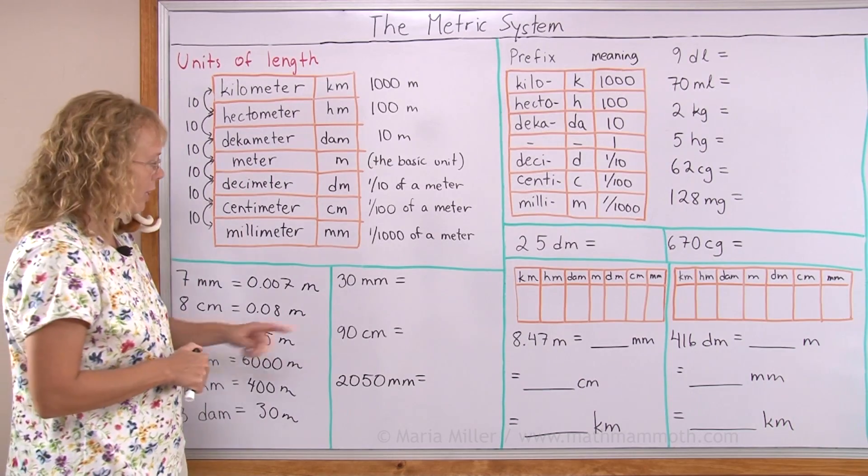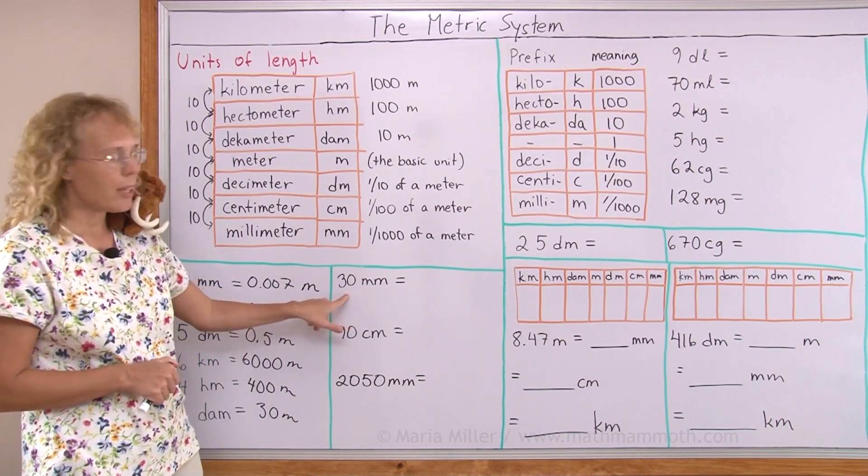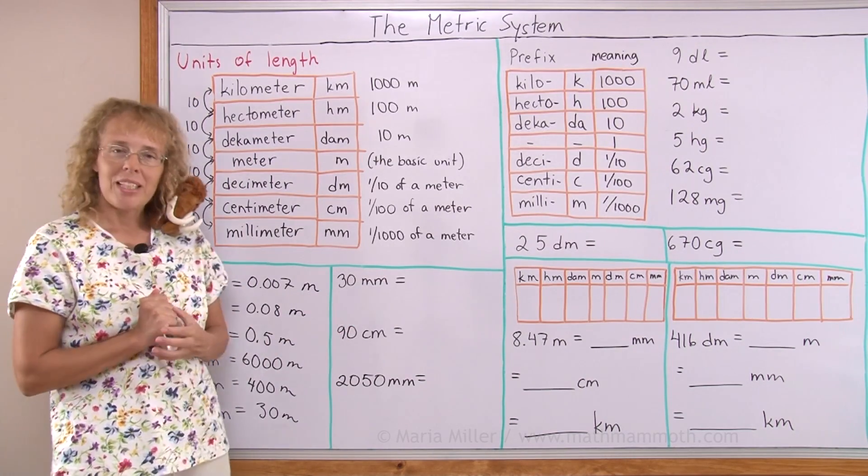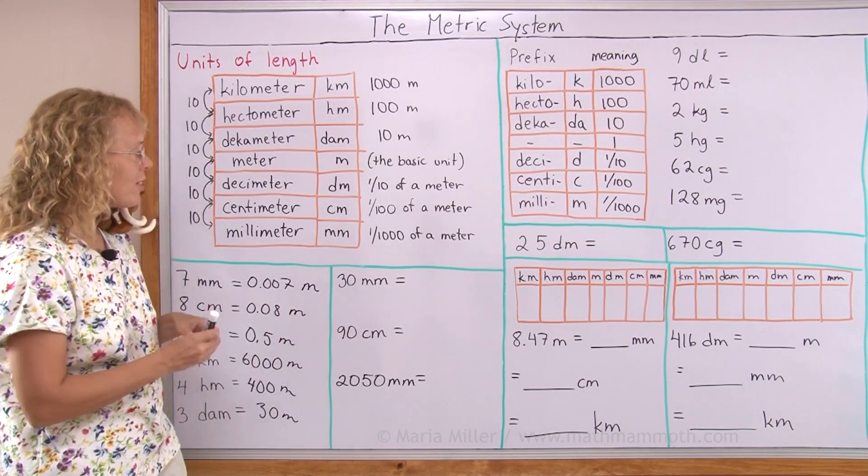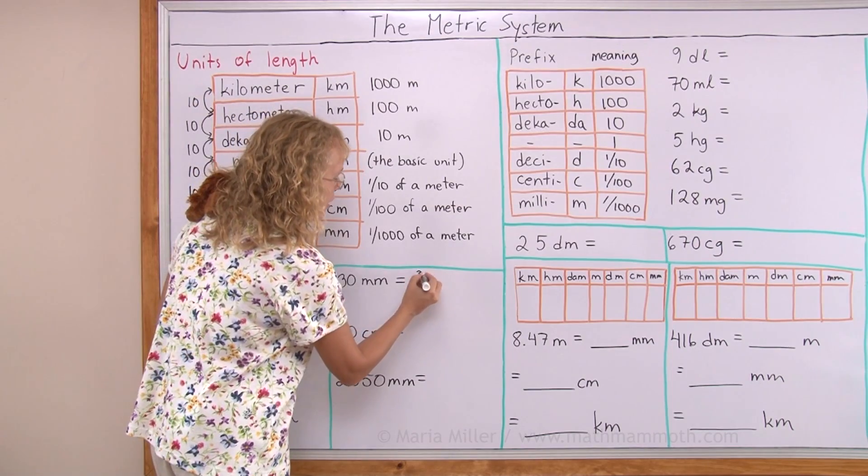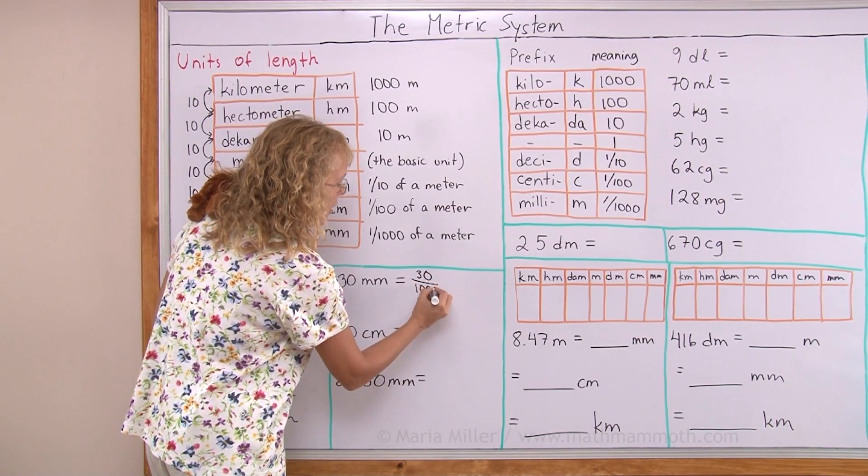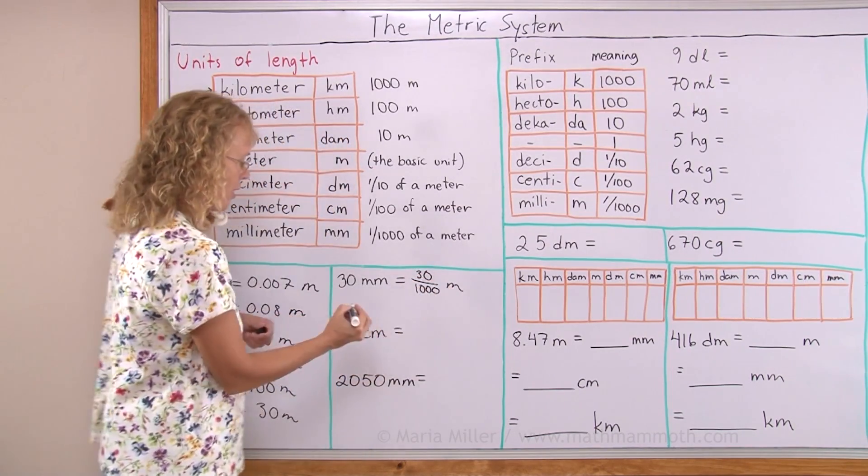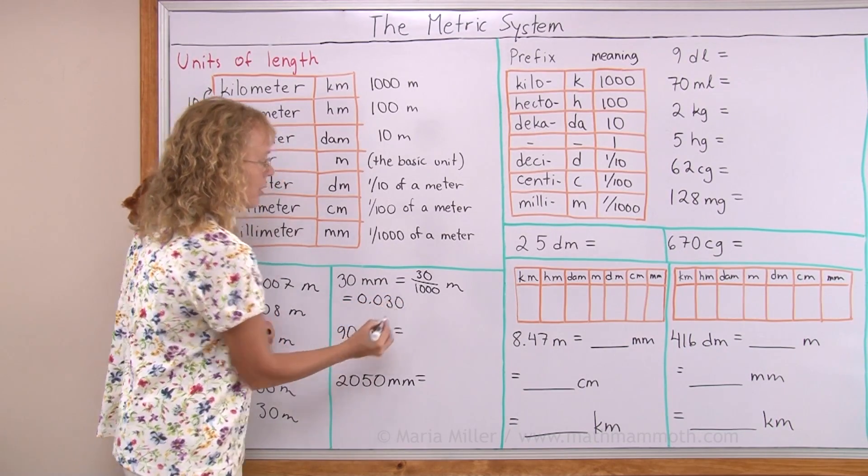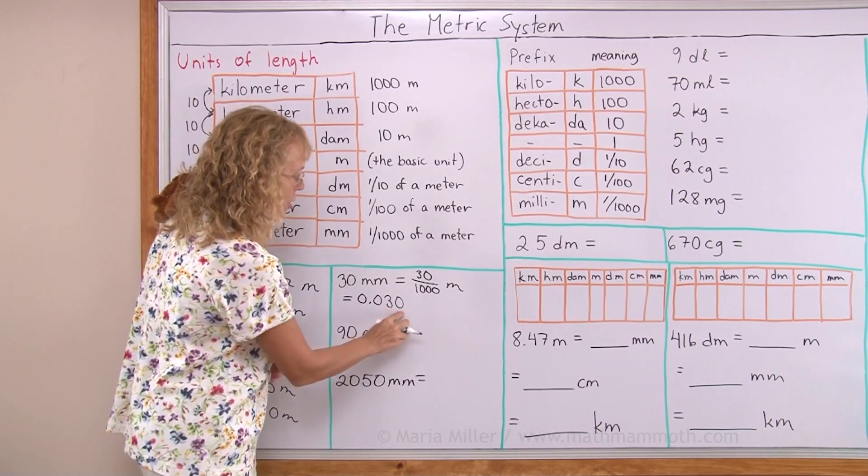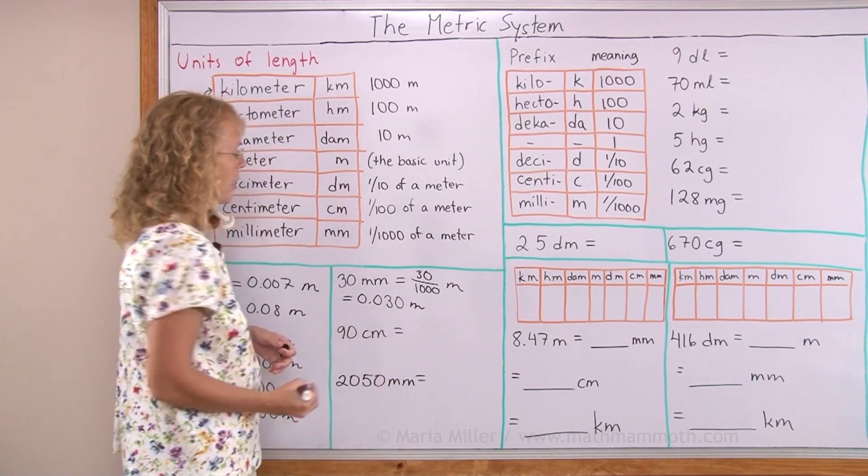Some more examples where we don't have just a single-digit number here. Thirty millimeters. But again, milli just means a thousandth, so I have here thirty-thousandths. Let me write it here as a fraction, 30/1000 of a meter. As a decimal though, you know decimals, fractions to decimals, so this is 0.030 meters.